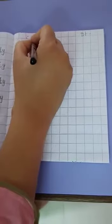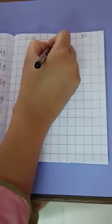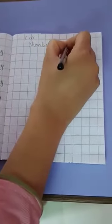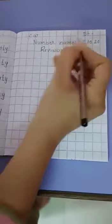CW, date, heading, number names 11 to 20, revision. Okay.